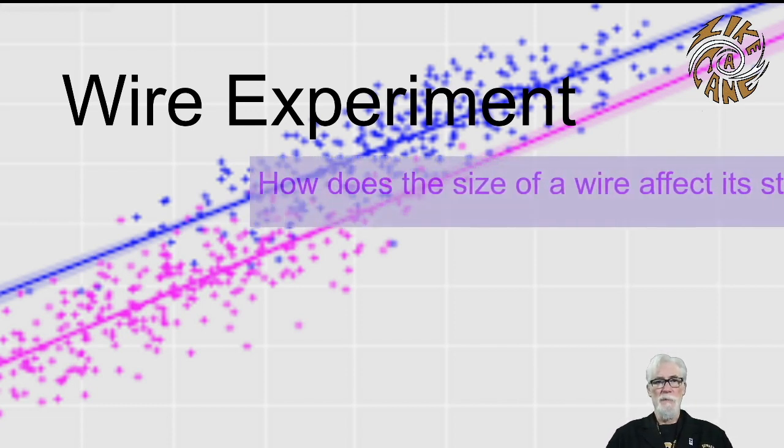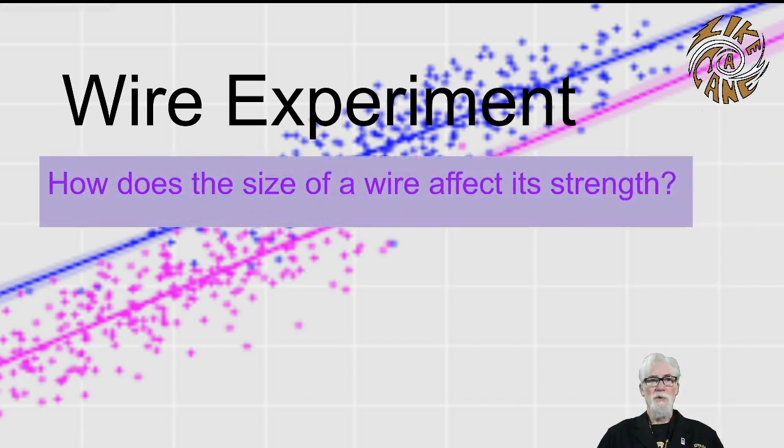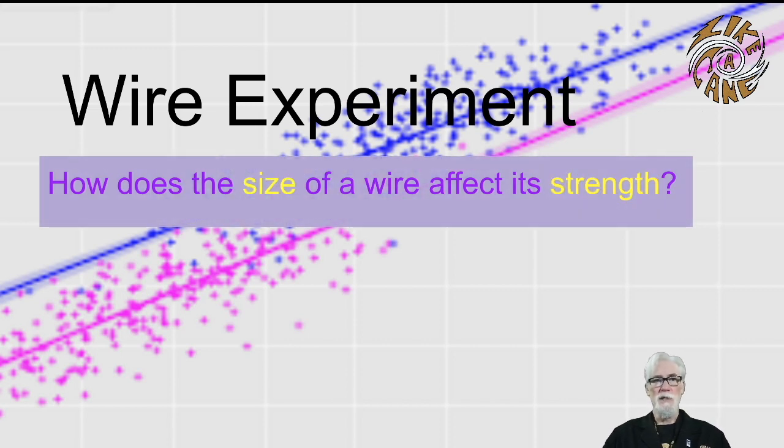Let's explore the idea of experimental design by using an example. Suppose our research question is, how does the size of a wire affect its strength? Here, the two quantities that we're interested in are the size of the wire and its strength.